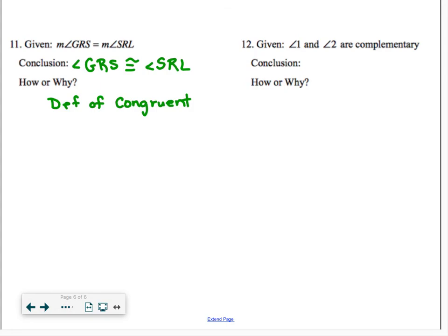And finally, in question number 12, we're given that two angles are complementary. Angle 1 and angle 2 are complementary. We should all know what that term complementary means. It means that those two angles add up to 90. So for my conclusion, to write that mathematically, I would say the measure of angle 1 plus the measure of angle 2 equals 90 degrees. How do I know? That's what it means to be complementary. For my justification, I can say the definition of complementary.